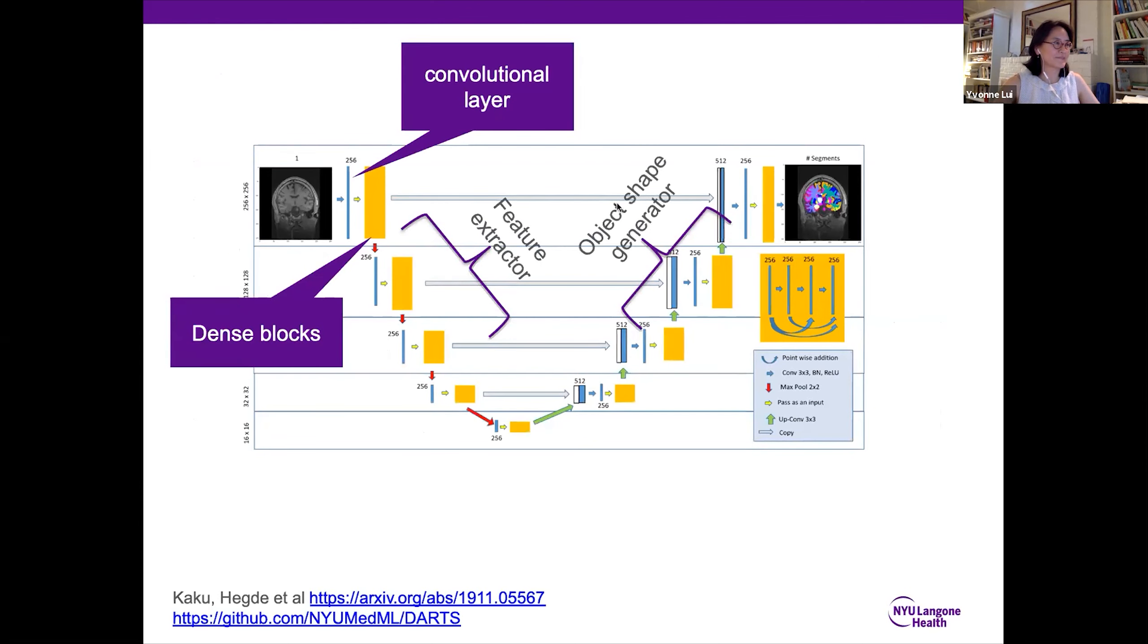It's just one example of many different models that are out there now, but it has this U-shape, and this is called the U-net, where for classification you do this downward arm to extract the features. At that point, you could probably decide whether something's a tumor or no tumor, or a cat or not a cat.